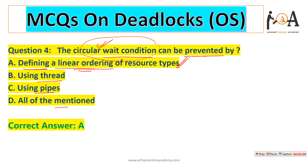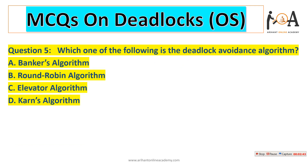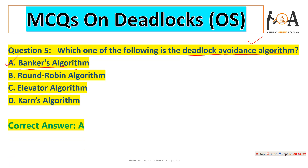The next question is: which one of the following is a deadlock avoidance algorithm? The very important name in operating systems is Banker's algorithm. Banker's algorithm is used to avoid deadlock, so option A is the correct answer. This question has been asked many times in IT officer exams, KVAS PGT, and once in UGC NET as well.